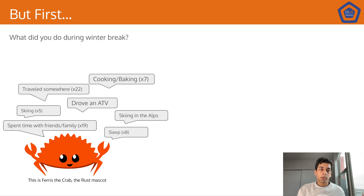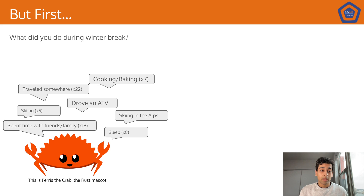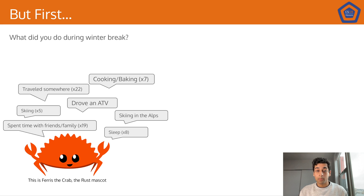I'm going to go over your answers from homework zero. It looks like all of you had very fun breaks. 22 of you traveled somewhere, five of you went skiing, one of you went skiing in the Alps — I'm very jealous. 19 of you spent some time with family and friends; I hope all of you had a nice and relaxing break. Seven of you did some cooking and baking — I also did a lot of cooking and baking, ate a lot of cookies. Eight of you slept; well, I hope all of you slept.